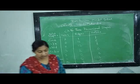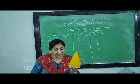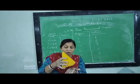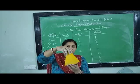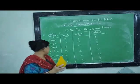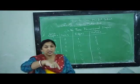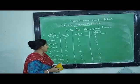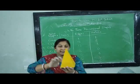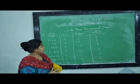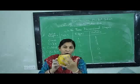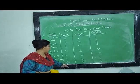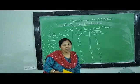Next comes the square pyramid. Like the triangular pyramid but the base is square. In a square pyramid we have five faces, eight edges, and five vertices — four vertices at the bottom and one at the top.